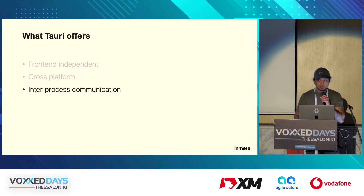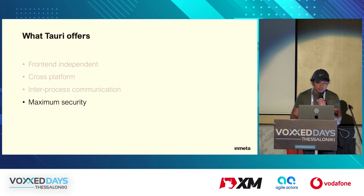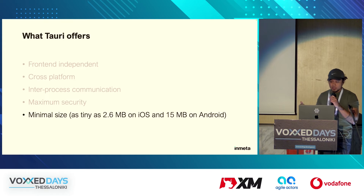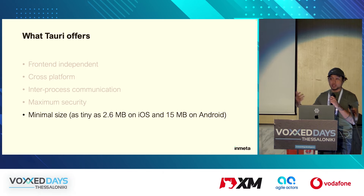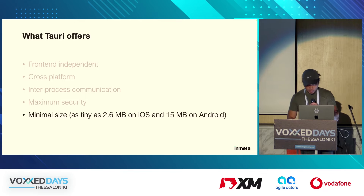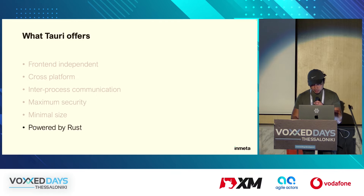Tauri also undergoes a security audit for major and minor releases. This covers not only code in the Tauri organization but also dependencies that Tauri relies on. A Tauri app only contains the code and assets specific for the app and doesn't need to bundle a browser engine with every app. Using the OS native web renderer, a Tauri app can be as tiny as 2.6 MB on iOS and 15 MB on Android. Rust places performance and security at its core, making it the ideal language for developing the next generation of applications.